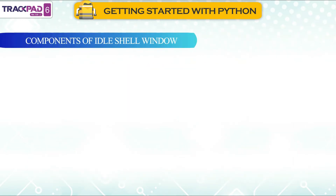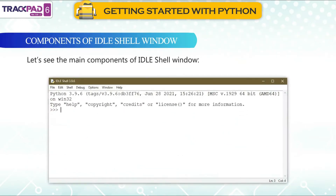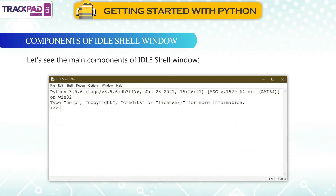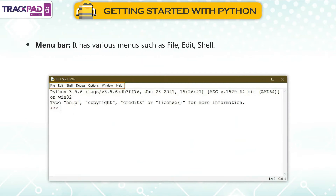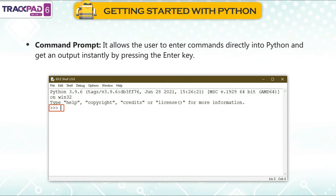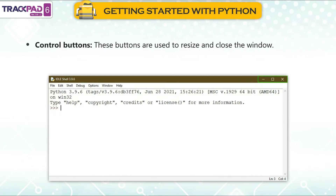Components of the IDLE shell window: The menu bar has various menus such as File, Edit, and Shell. The command prompt allows the user to enter commands directly into Python and get output instantly by pressing the Enter key. Control buttons are used to resize and close the window.